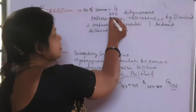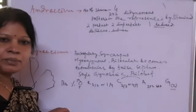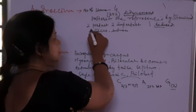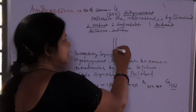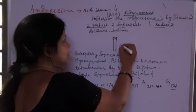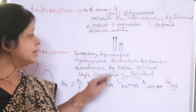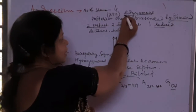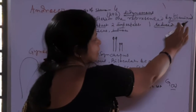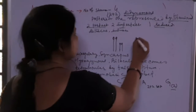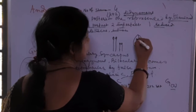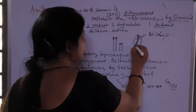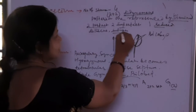The androecium has four stamens in a didynamous condition — two longer stamens and two shorter stamens (2 plus 2). Basically there are five stamens, but one is reduced and represented as a staminode. The anthers are dithecous (two-lobed), and the condition is introrse, meaning the filament is attached to the end of the anther lobe facing inward.